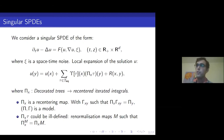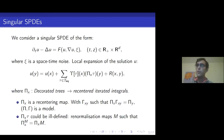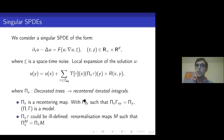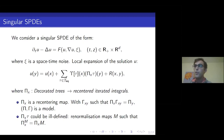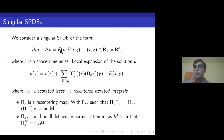To construct the full model in regularity structures, one adds a map Γ depending on two points x and y, allowing you to go from an expansion around x to one around y. Together, π and Γ constitute what is called a model. In the context of SPDEs, Γ is strongly determined by π_x — the recentering map actually determines Γ. This was the first renormalization or recentering operation.